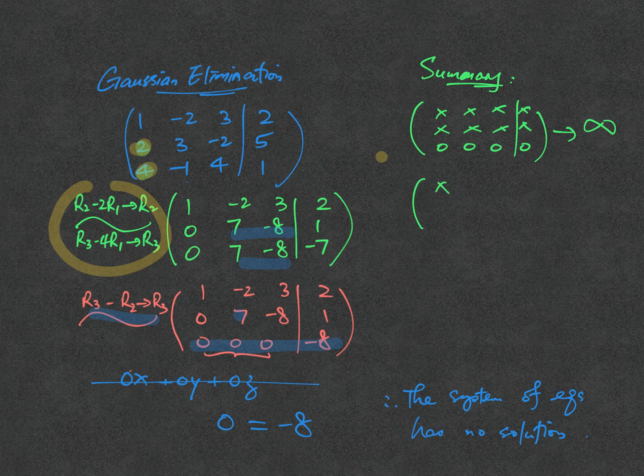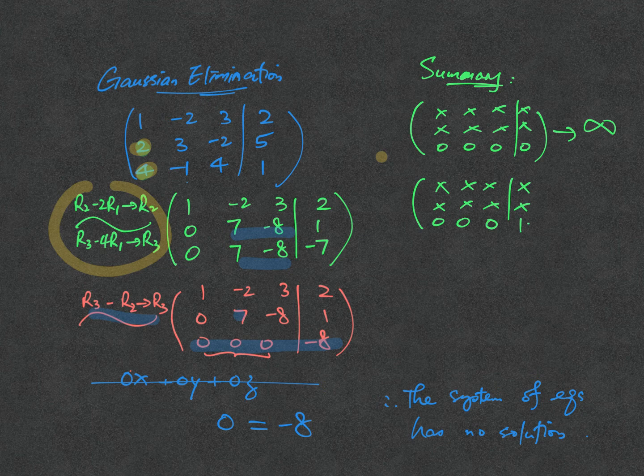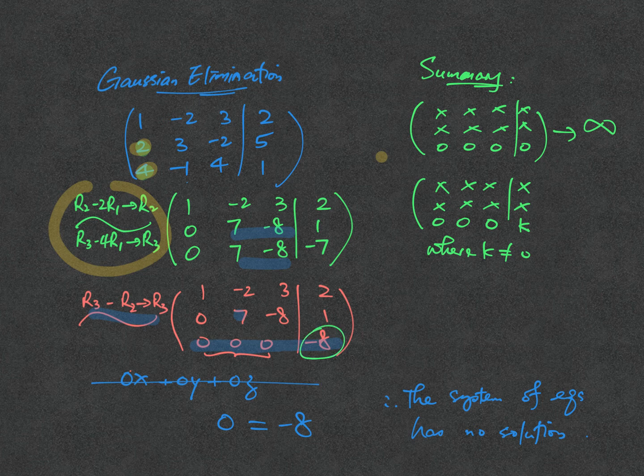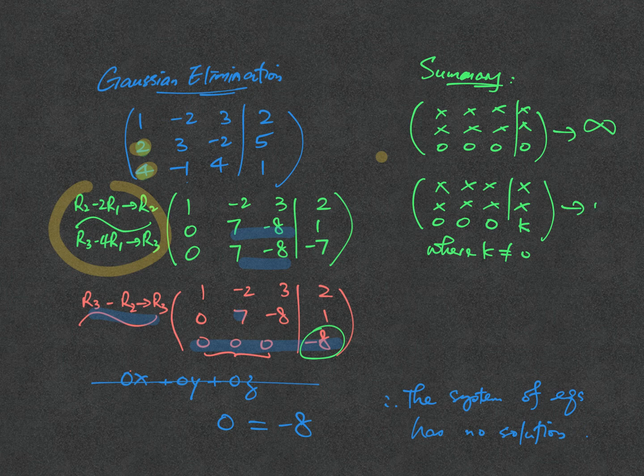The other case will be the row echelon form giving you a reasonable answer, having all 0s but equal to a certain constant. Where k itself can't be 0—it may be 1, it may be 2, or it may be minus 8 in our case. In this situation, we will say there is no solution of the equation, of the system.